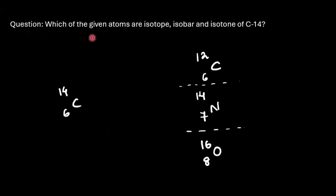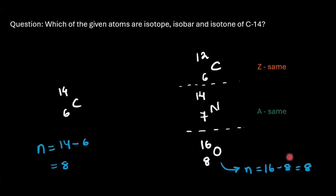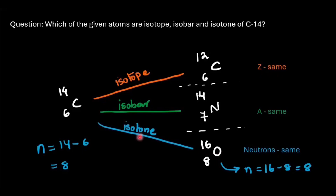Let's look at a couple of questions. Which of the given atoms are the isotope, isobar, and isotone of C-14? Take a moment to solve this. Carbon-12 has the same Z as carbon-14, so they are isotopes. Nitrogen-14 has the same mass number as carbon-14, so they are isobars. For oxygen-16, neither Z nor A is the same, but carbon-14 has 8 neutrons and oxygen-16 also has 8 neutrons, so they are isotones. In summary, carbon-14 and carbon-12 are isotopes; carbon-14 and nitrogen-14 are isobars; and carbon-14 and oxygen-16 are isotones.